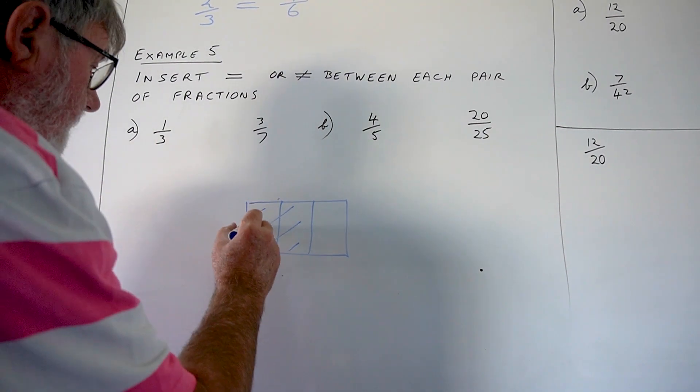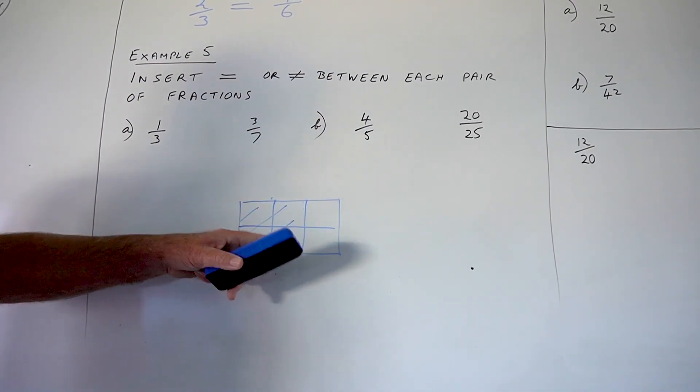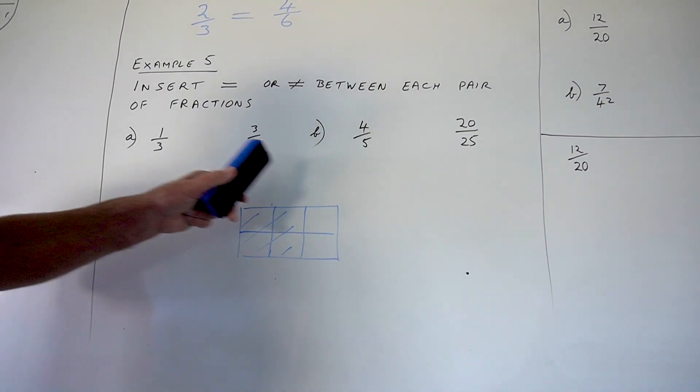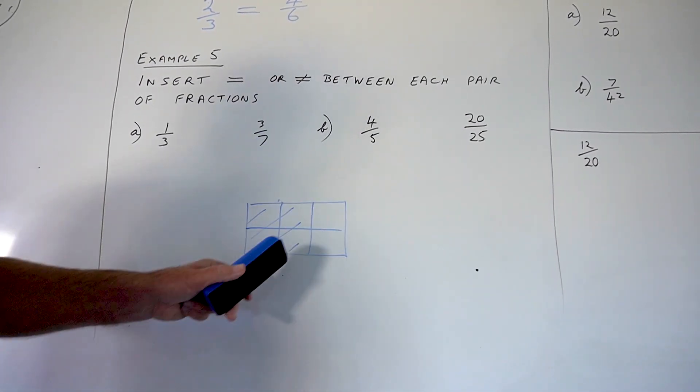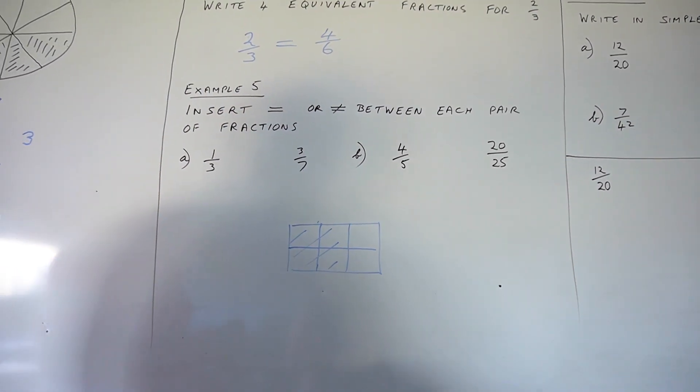If we now make our rectangle cut into 6 pieces, you can see that I've got 4 pieces, but each piece, or the amount of shaded, is still exactly the same. So, 2 thirds and 4 sixths are the same.